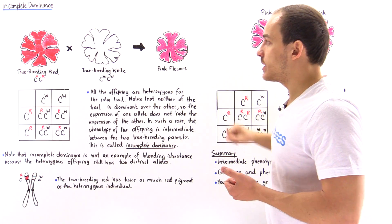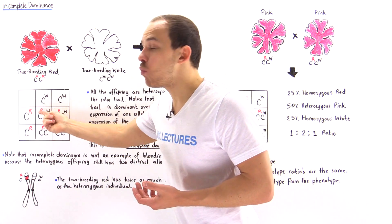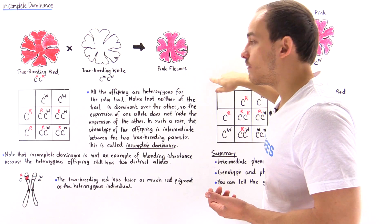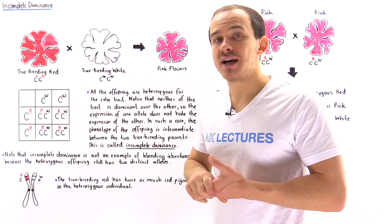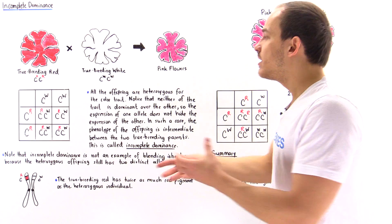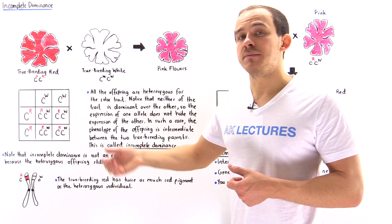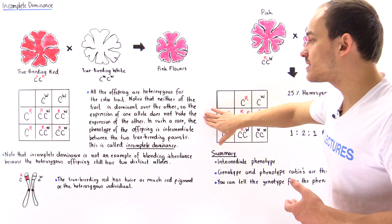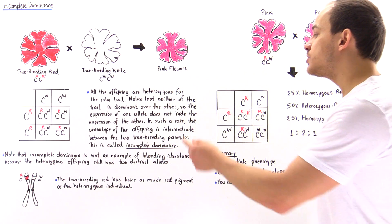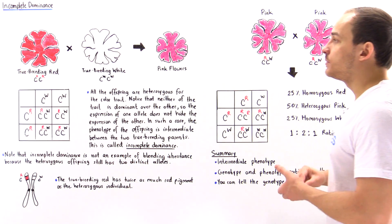All the offspring in this case are heterozygous for that color trait, meaning we have one red allele and one white allele. Notice that neither trait is dominant with respect to the other, because these offspring are neither red nor white — they're somewhere in between. The expression of one allele will not actually be inhibited by the other allele. The phenotype of that offspring will be somewhere intermediate between the two true breeding parents. This type of mode of inheritance is known as incomplete dominance.